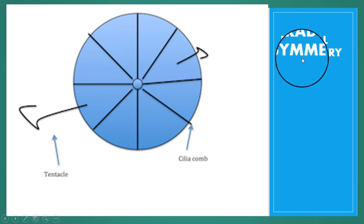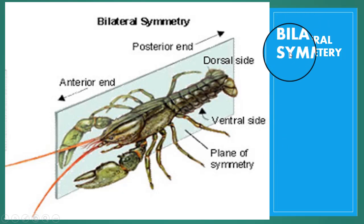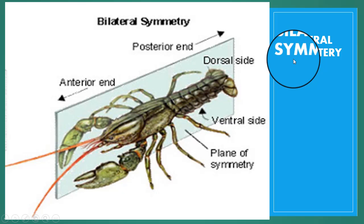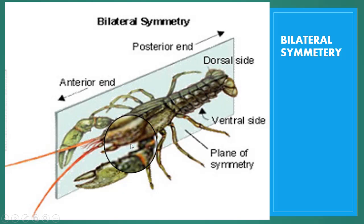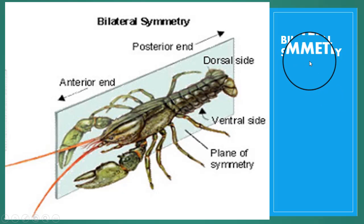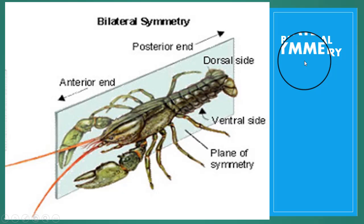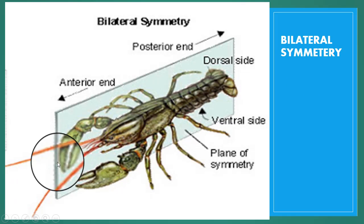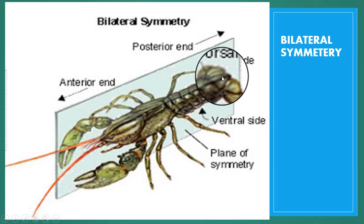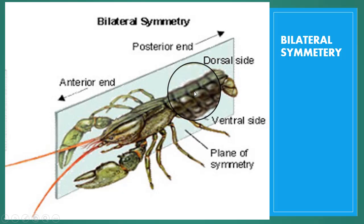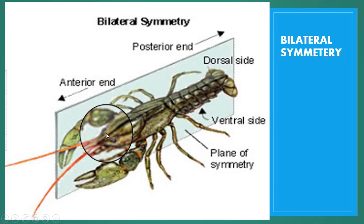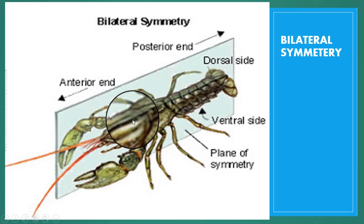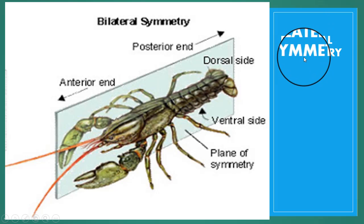Bilateral symmetry applies to animals that can be divided along a median longitudinal or sagittal plane into two mirrored halves — right and left. The appearance of bilateral symmetry in evolution was a major advancement because bilateral animals are much better suited for directional, forward movement than radially symmetrical animals. Bilateral animals are collectively called Bilateria, and examples include scorpions and crabs.